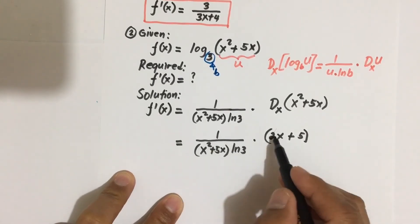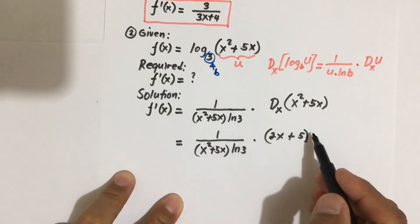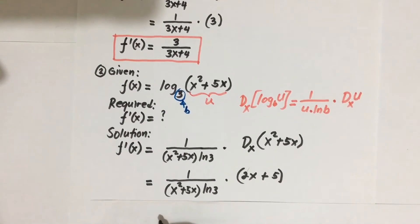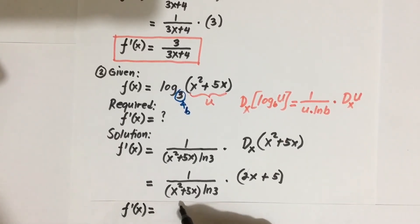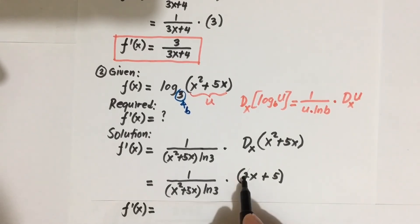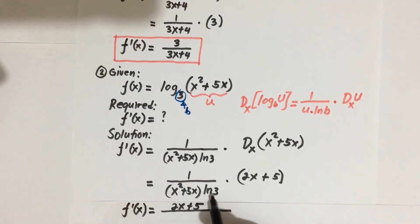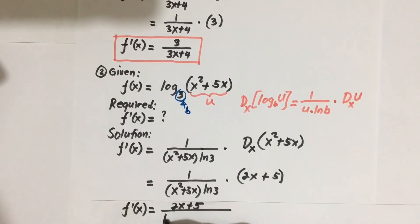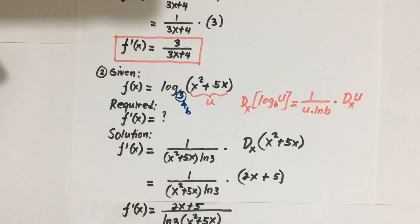Multiplying the numerators and denominators: 1 times (2x plus 5) gives 2x plus 5 in the numerator. Therefore, F prime of X is equal to (2x plus 5) divided by ln(3) times (x squared plus 5x). This is our final answer for Example 2.